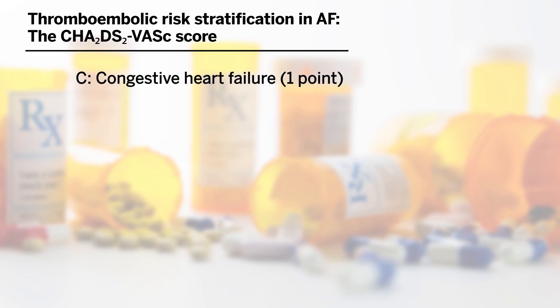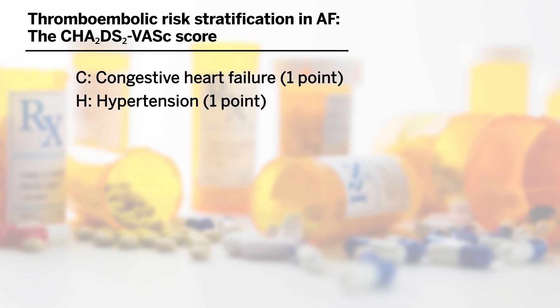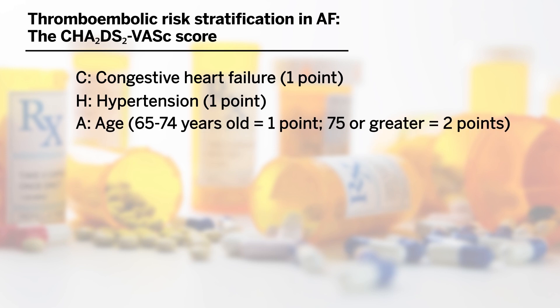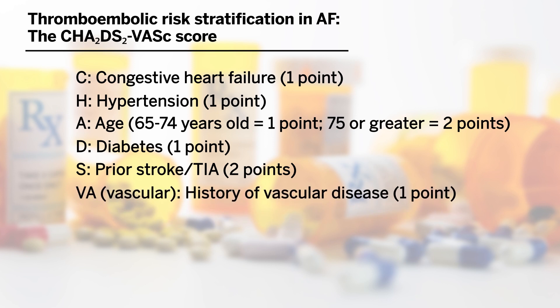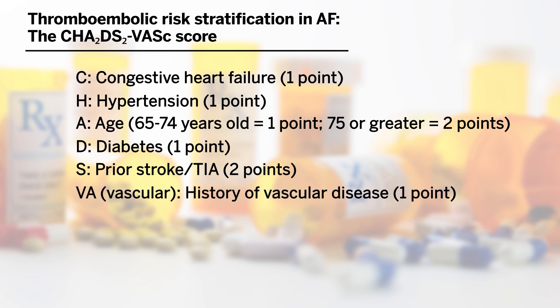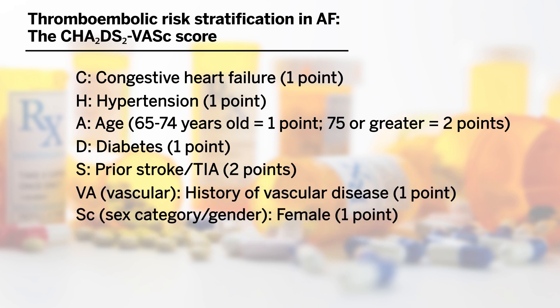Each letter in the acronym correlates with a different condition the patient may have. The C is for congestive heart failure, H for hypertension, A for age — one point if the patient is between 65 and 74, or two points if they're over 75. D is for diabetes, S is for a prior stroke or TIA. Vascular refers to any vascular disease the patient has, and gender provides another point for female patients.